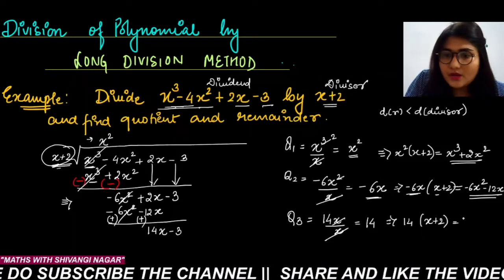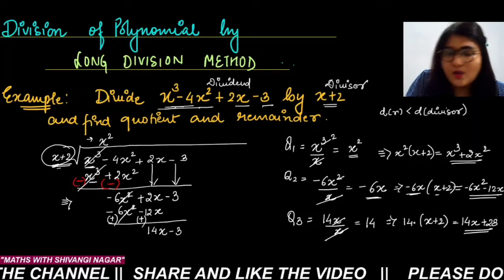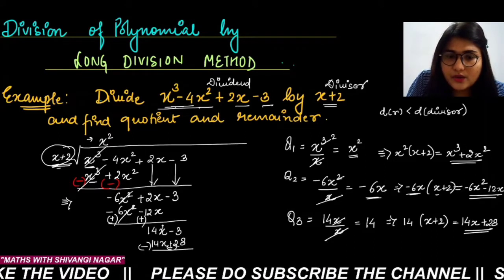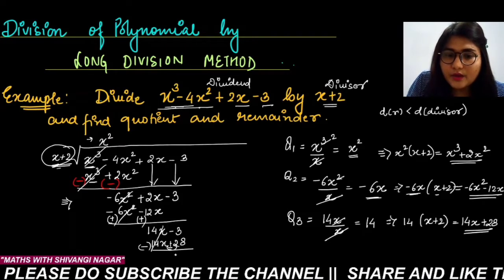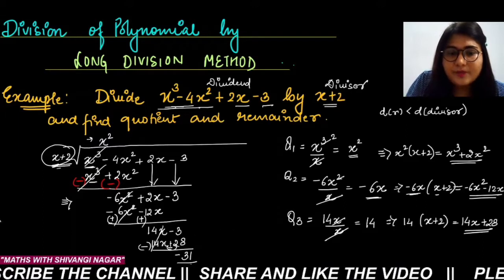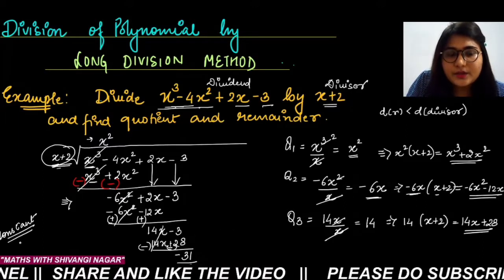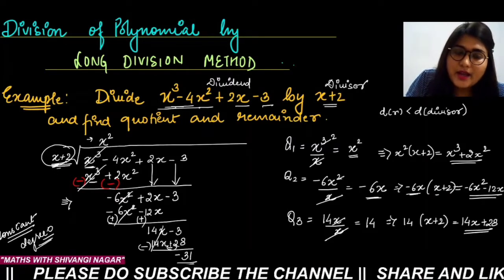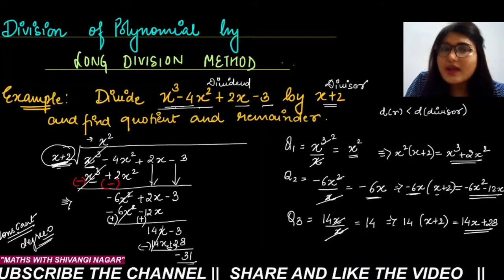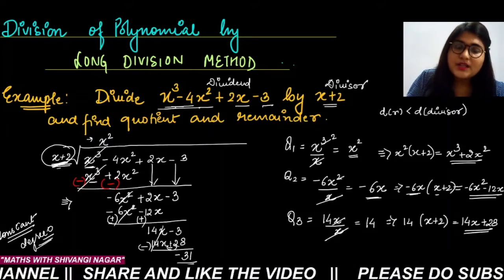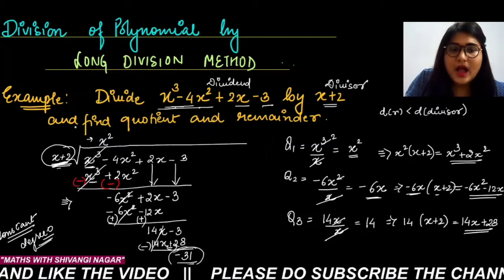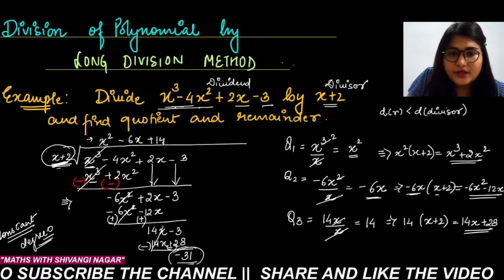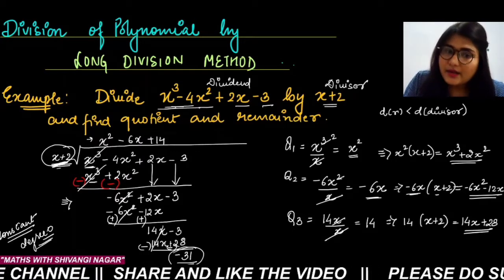Multiply 14 by the divisor (x plus 2): 14 times x plus 14 times 2 gives 14x plus 28. Place this below. Sign change: 14x cancels. Minus 3 minus 28 gives minus 31. This is a constant — degree 0. The remainder's degree is now less than the divisor's degree, so we stop. The remainder is minus 31 and the quotient generated is x² minus 6x plus 14.